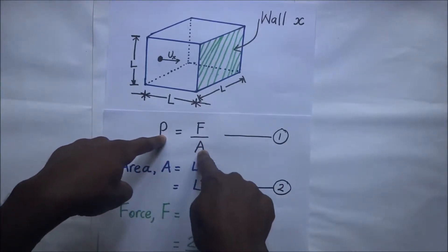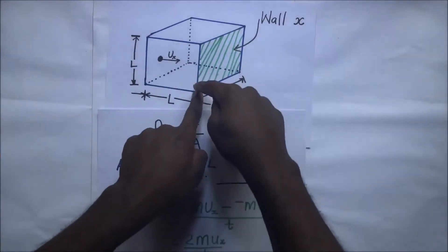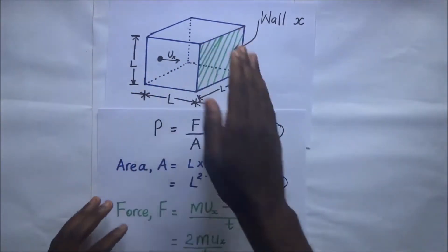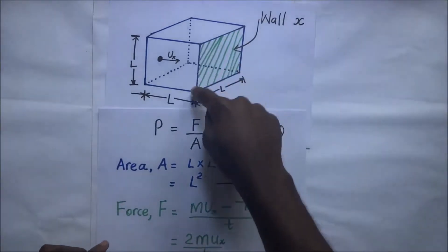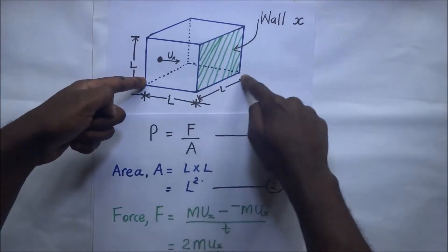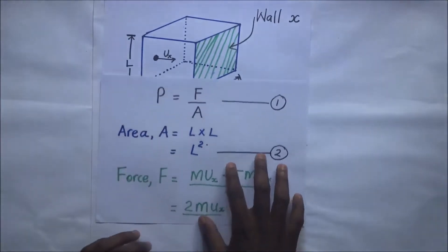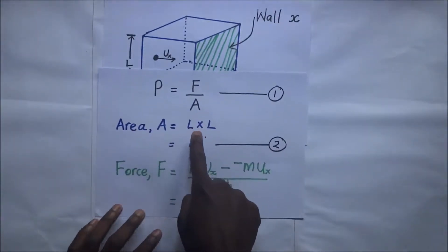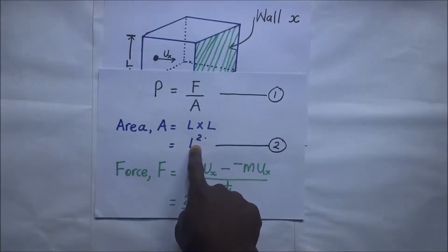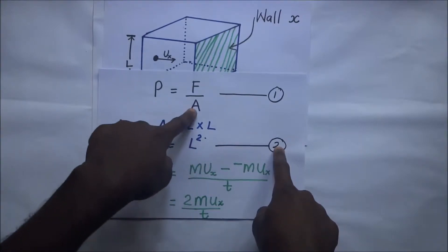Let's begin with area. The particles are moving and colliding with wall X. The area of this wall, according to our diagram, is L times L, since it is a cuboid with the same length on each side. So the area where the pressure is being imposed is L squared. That is our second expression.